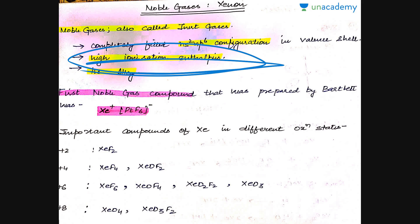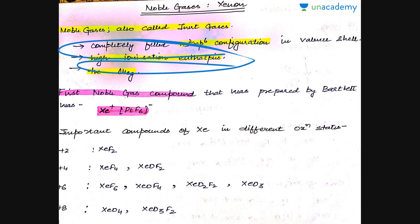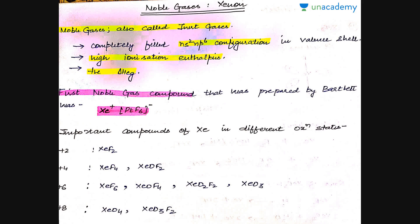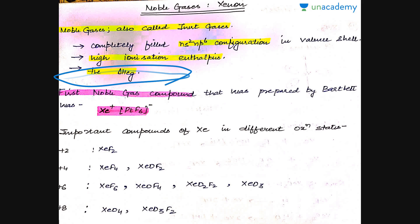Secondly, they have very high ionization enthalpy. Since they have a completely filled configuration and are already stable, we require a huge amount of energy to remove even a single electron from their outermost shell. On the other hand, if we want to add an electron to them, we again have to supply a huge amount of energy, so they also have very high electron gain enthalpy — and usually the electron gain enthalpy values are positive.